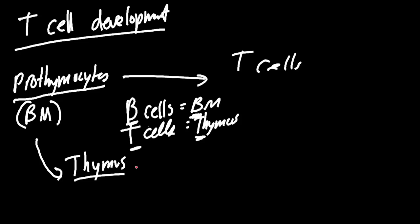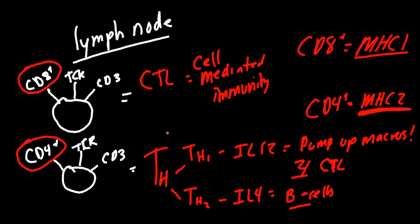In recap: prothymocytes are made in the bone marrow, travel to the thymus, and start in the cortex where positive selection occurs — choosing between CD4 or CD8. They travel to the medulla for negative selection, eliminating self-reactive T lymphocytes. From there they go to the lymph node where they're active, functioning as either cytotoxic T lymphocytes or T helper cells.